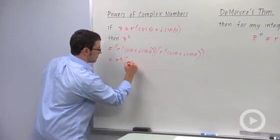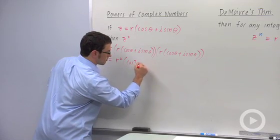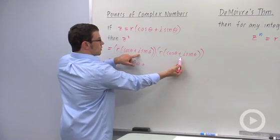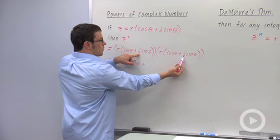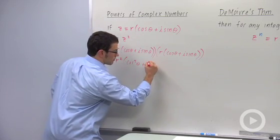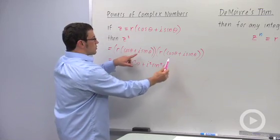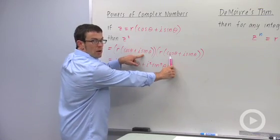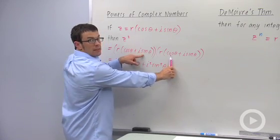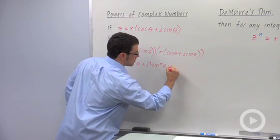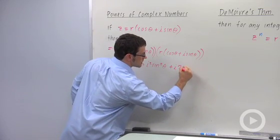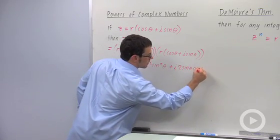So that's cosine squared theta. And then the other real term is going to be plus i squared sine squared theta. And since I'm squaring, it'll be twice the mixed product, i sine theta cosine theta. So plus i times two sine theta cosine theta.